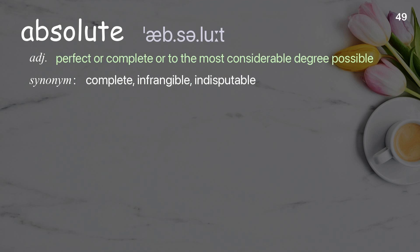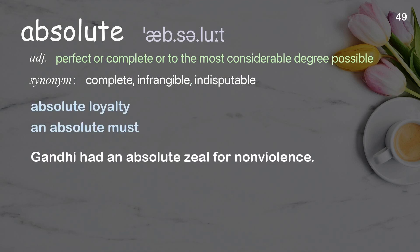Absolute: perfect or complete, or to the most considerable degree possible. Examples: absolute loyalty; an absolute must. Gandhi had an absolute zeal for non-violence.